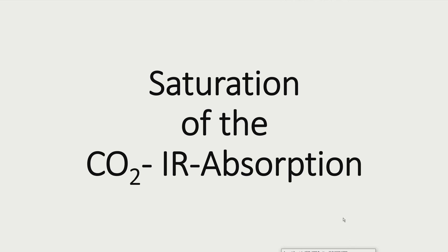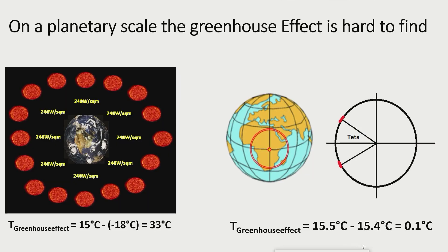In this video I will talk about the saturation of the CO2 infrared absorption in the Earth's atmosphere. In the last two videos I covered the greenhouse effect on a more planetary scale. It turned out that the alleged greenhouse effect of 33 degrees centigrade is the result of an improper use of the Stefan-Boltzmann law, and that a less abusive application of this law makes the greenhouse effect almost disappear.